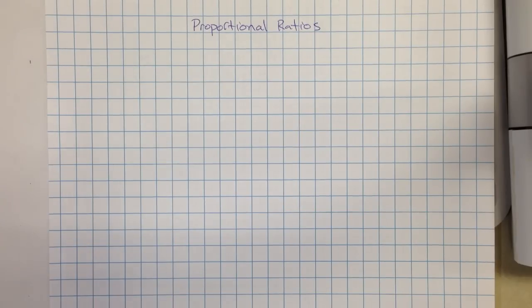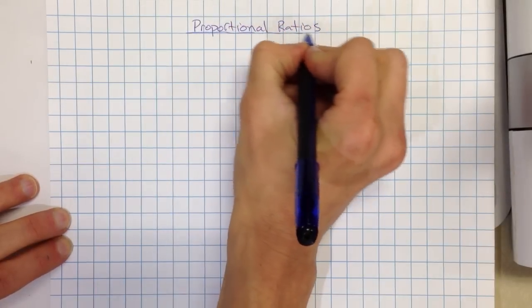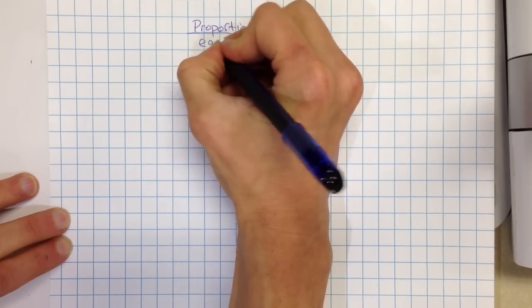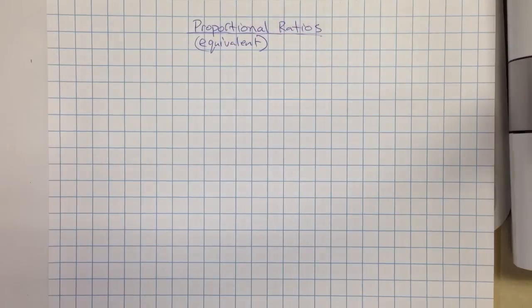Okay, so I wanted to talk a little bit about proportional ratios. This is something that we introduced today, a word that maybe we haven't been using as much in math, but is very similar to the word equivalent. So I'm just going to write equivalent underneath it. Because when we have proportional ratios, what that means is we have two ratios that are really equivalent to each other if we were to simplify them.